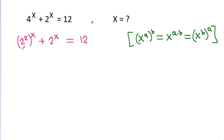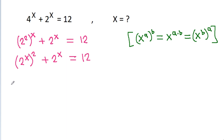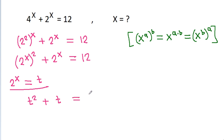So 2 power 2 whole power x will be 2 power x whole power 2, so 2 power x whole power 2 plus 2 power x is equal to 2n. And if we take 2 power x equal to t, then it is t squared plus t is equal to 2n, and t squared plus t minus 12 is equal to 0.